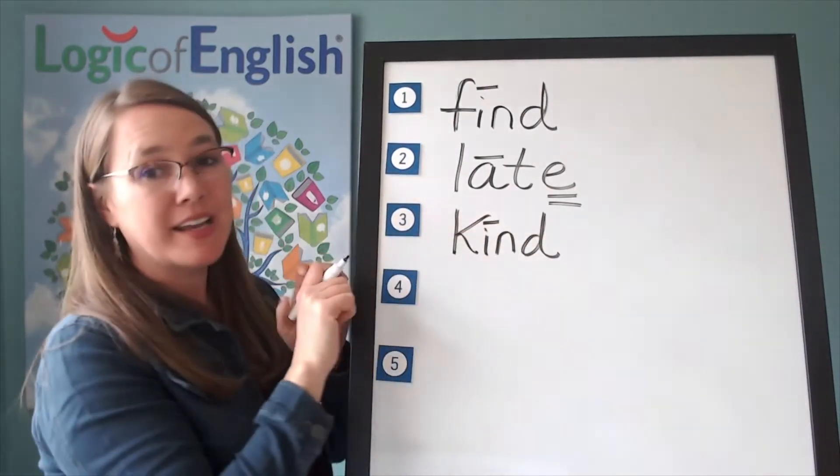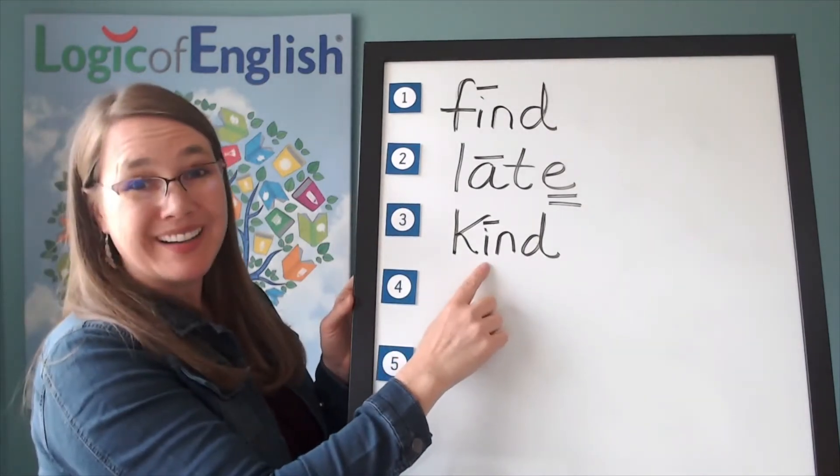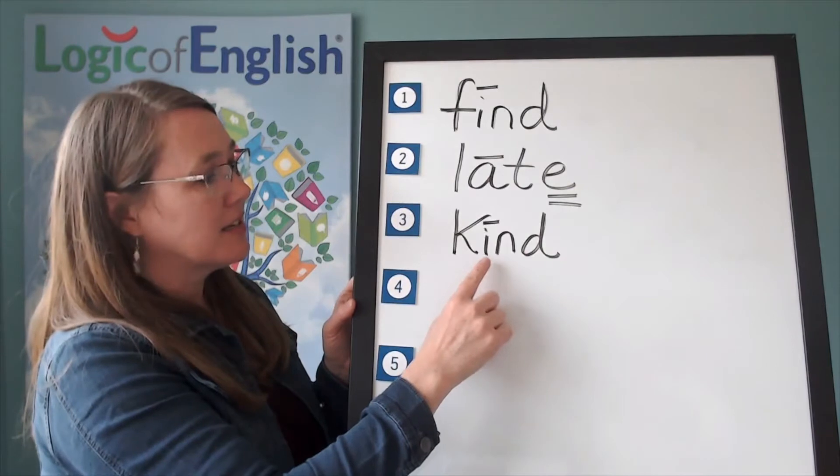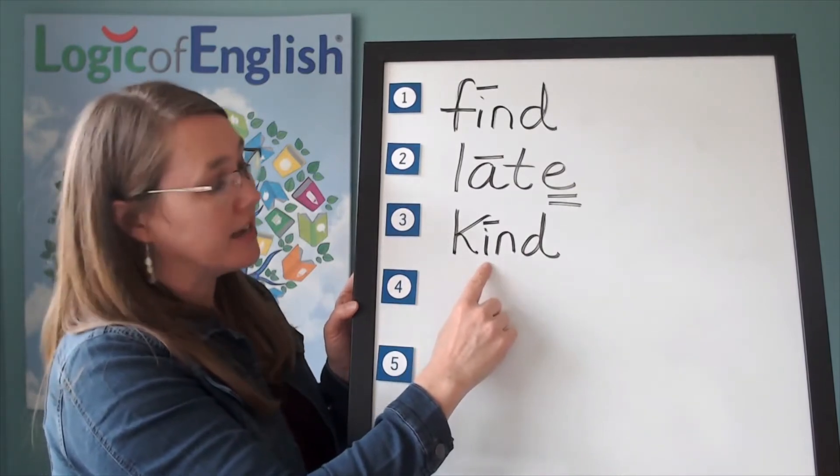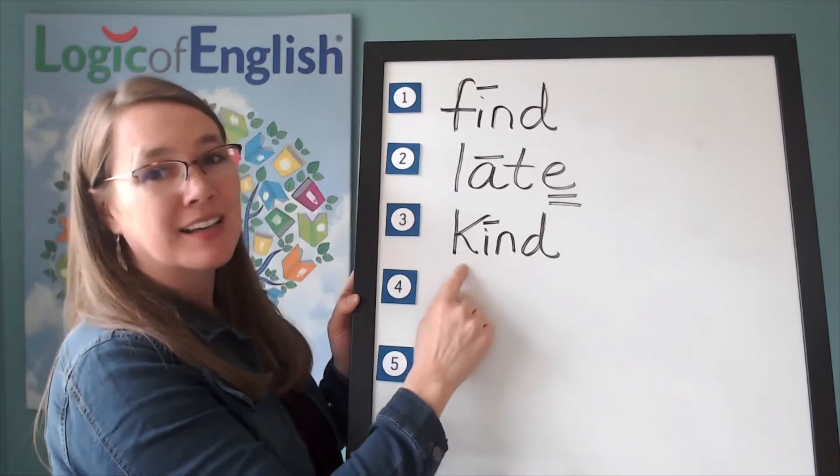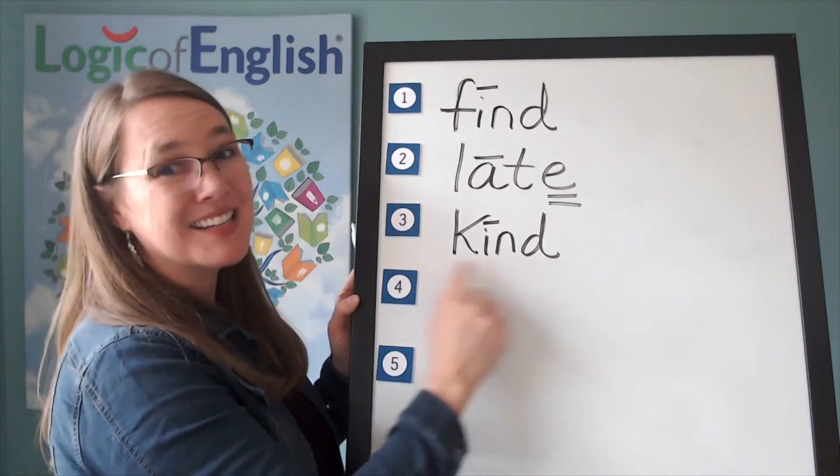How will we mark kind? You're right. We'll put a line over the I. Why? It's saying its long sound. And why is it saying its long sound? I and O may say I and O before two consonants. And there it is. K-I-N-D. Kind.